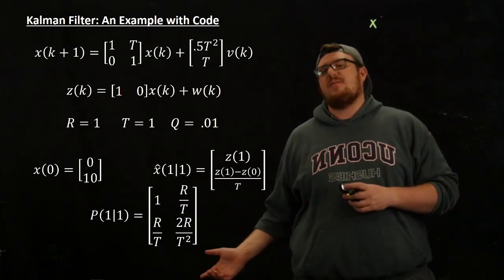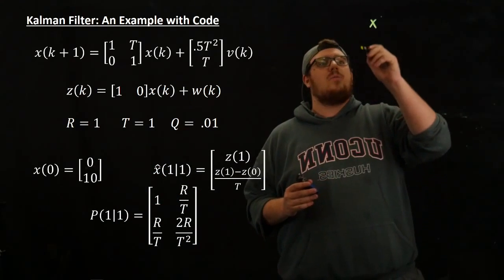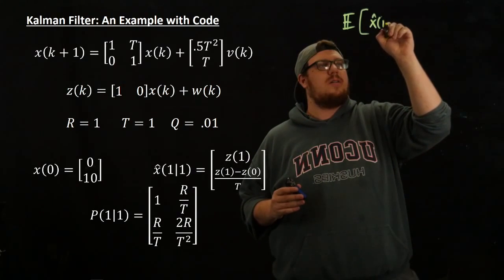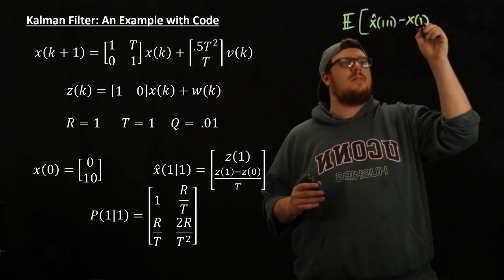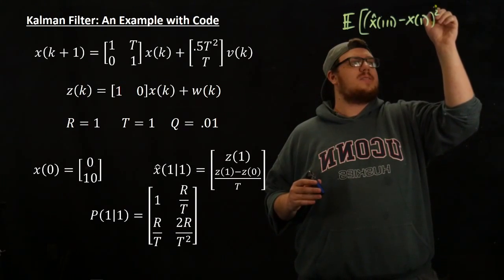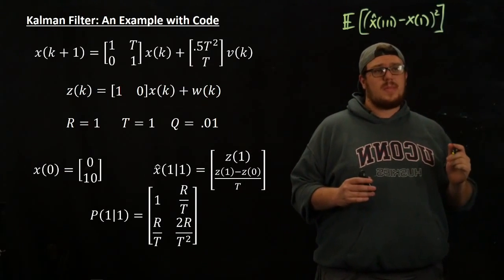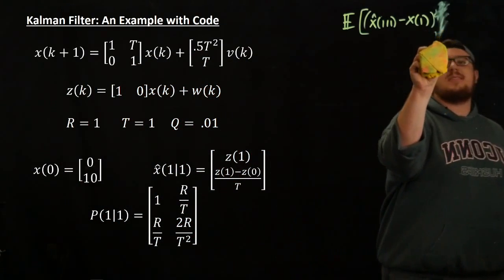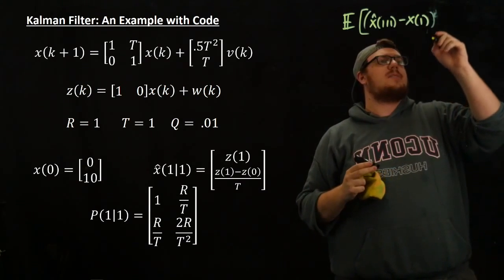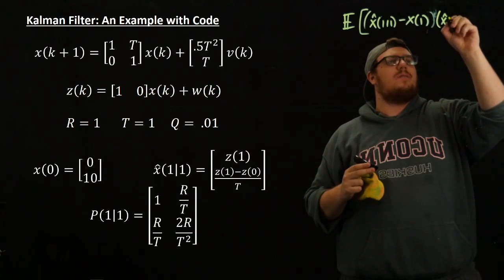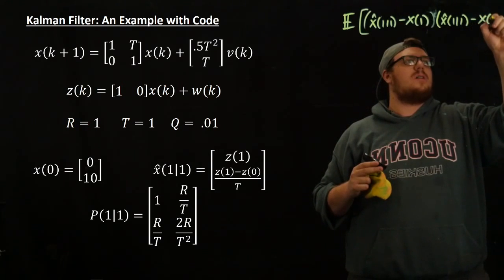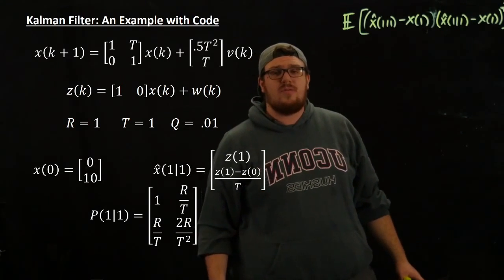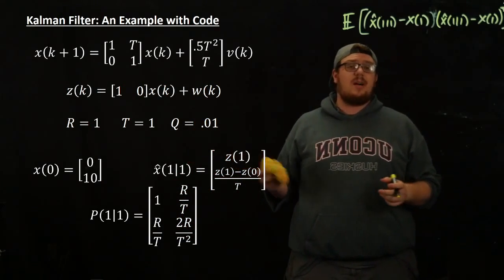And now what we're going to do is we're going to find what the covariance of this estimate is, which is the expected value of our estimate at time one minus the exact value at time one. And then because it's variance, we need the squared value of this. Technically, the technical definition for variance is that you only square it when it's a scalar. Otherwise, you multiply by the transpose of the vector. So we get x(1|1) minus x of one, which is a vector, transpose. So what we're going to do very quickly is we're going to just prove that this P(1,1) is correct.